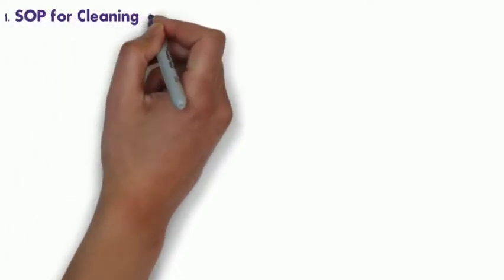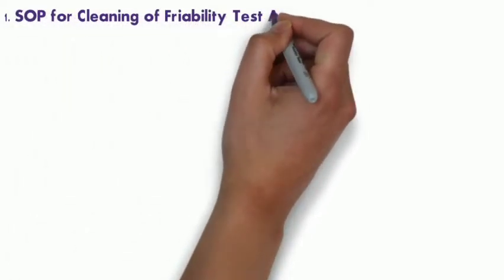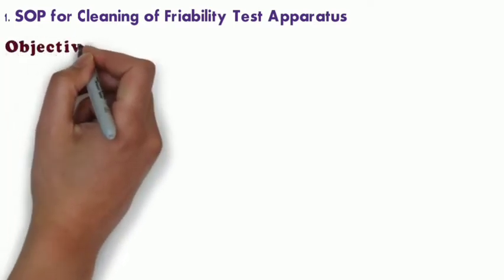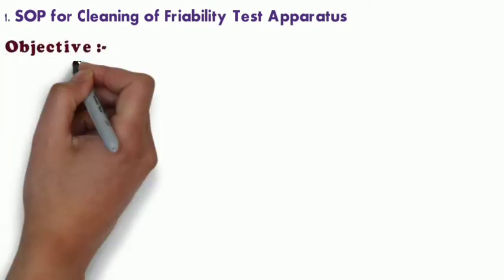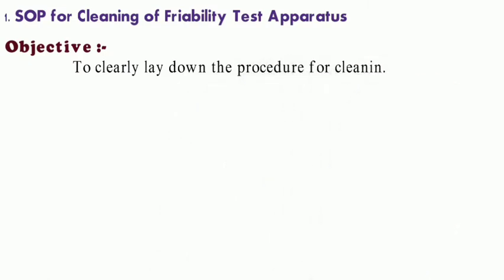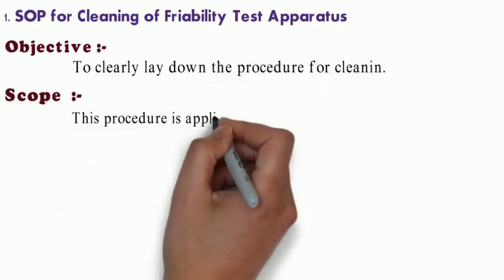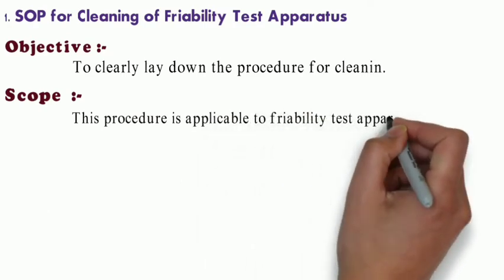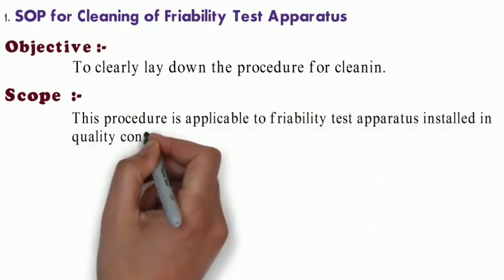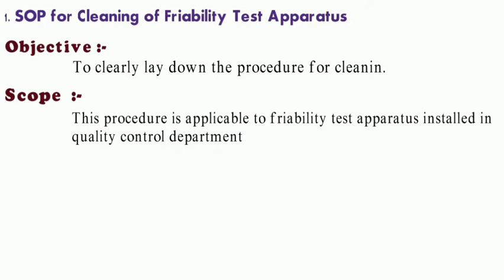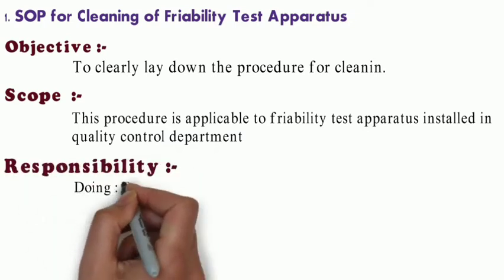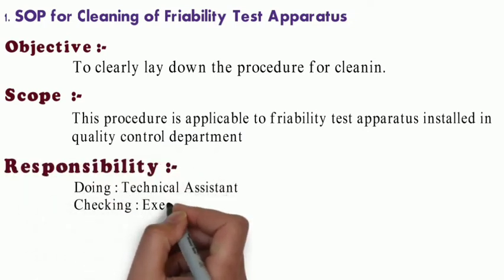First of all, we have to check our SOP for cleaning of friability test apparatus. SOP means standard operating procedure. In objective, we have to clearly lay down the procedure for cleaning. Scope: this procedure is applicable to friability test apparatus installed in quality control department. Responsibility of doing is for technical assistance and checking is for executive manager.